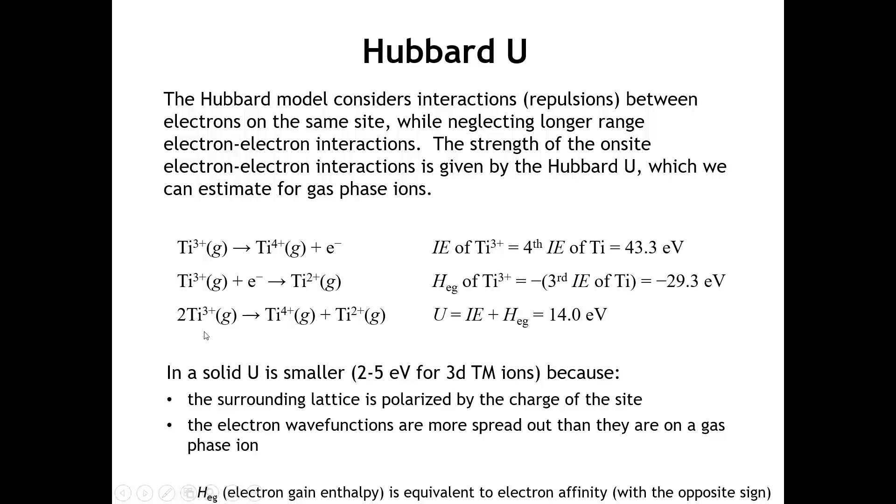If I add these two equations together, I've got two titanium 3-plus ions go to titanium 4-plus and titanium 2-plus. That's what we saw in our picture. The energy of that is 14 electron volts, which is pretty big. The band gap of silicon is just one electron volt by comparison. This is a substantial penalty for moving the electrons closer together.